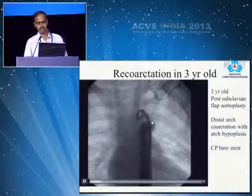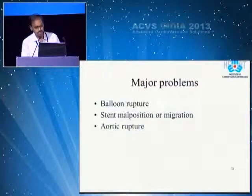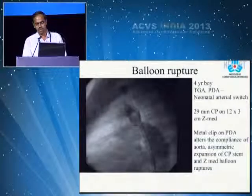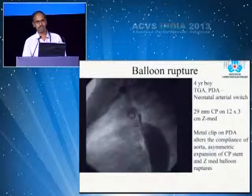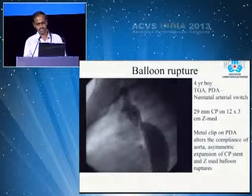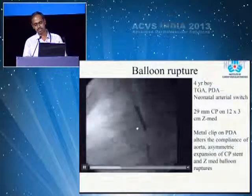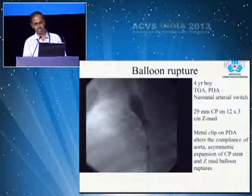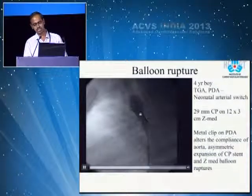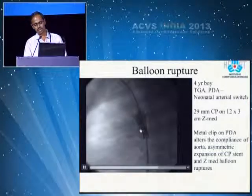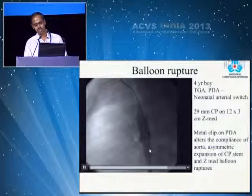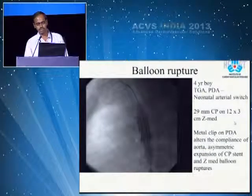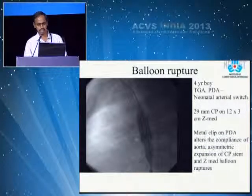This is a re-coarctation in a child with isthmic hypoplasia and distal transverse arch hypoplasia. The major problems in coarctation stenting are: balloon rupture, stent malposition, and aortic rupture. Balloon rupture happens when choosing a very compliant low-pressure balloon or when the lesion is very rigid — for example, a post-TGA arterial switch with a metal clip on the anterior aortic wall where the ductus was divided. The metal clip offers great resistance for dilatation. Then you must advance a much higher-pressure balloon through the same stent to deploy it. Once the balloon ruptures, carefully remove it and reintroduce a new low-profile balloon.